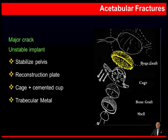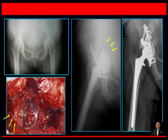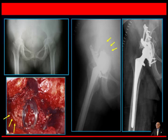If trabecular metal is used, you may not need a reconstruction plate because trabecular metal itself will work as a bone graft. Here is an example of a lady with bilateral rheumatoid arthritis and protrusio, with a large acetabular fracture that is unstable and the stability of the implant is compromised. This was treated effectively by using bone graft, a reconstruction plate to stabilize the pelvis, use of cage, cement, and then a cemented cup.